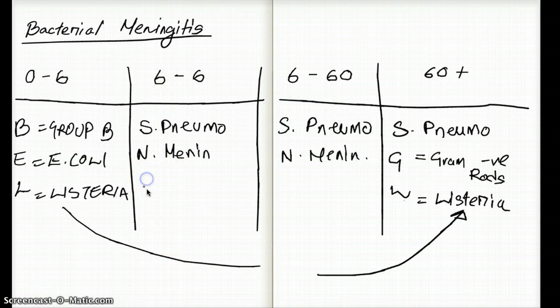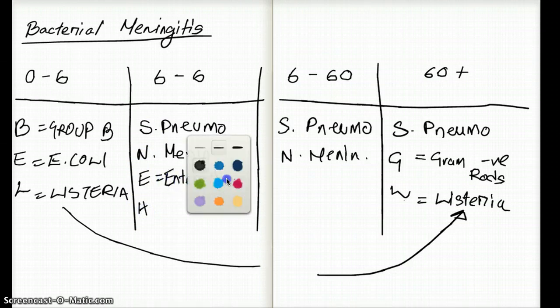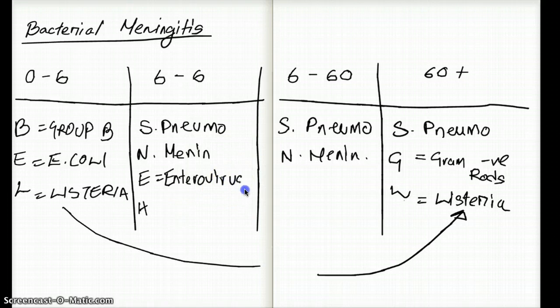After meningitis, you have SNEH. E is going to be Enterovirus, and H is going to be Haemophilus Influenzae.